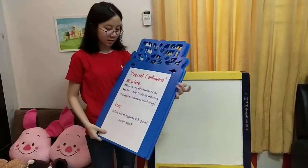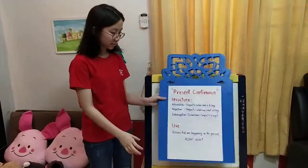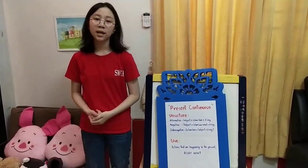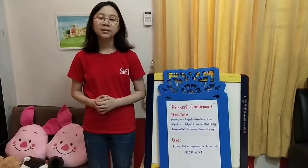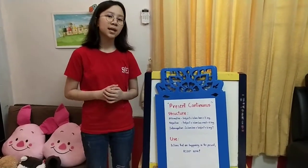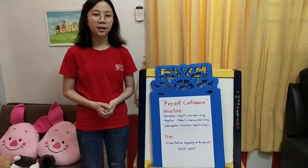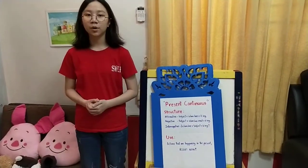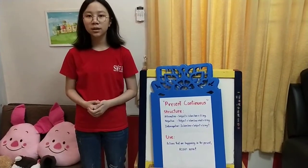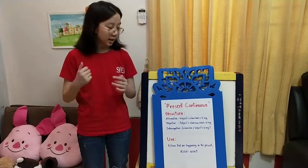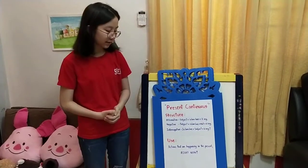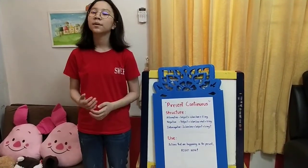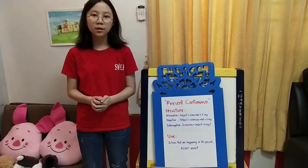Now let's learn about present continuous tense. The structure of present continuous tense in affirmative form is: subject plus is/am/are plus verb-ing. In negative form: subject plus is/am/are plus not plus verb-ing. In interrogative form: is/am/are plus subject plus verb-ing, question mark.